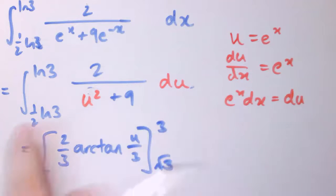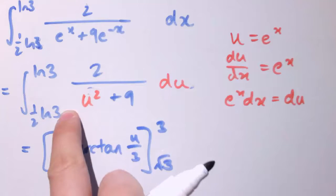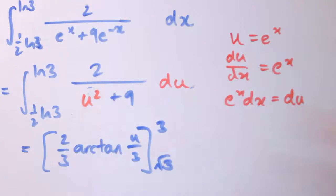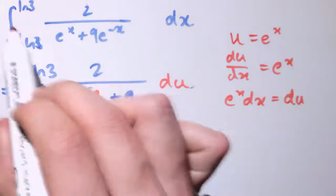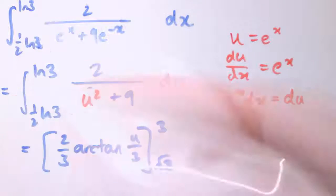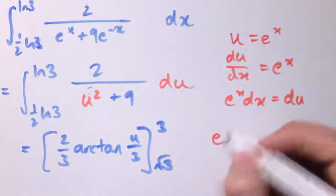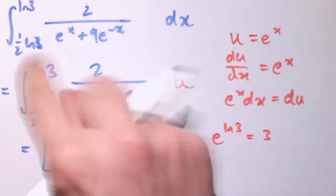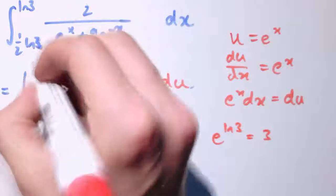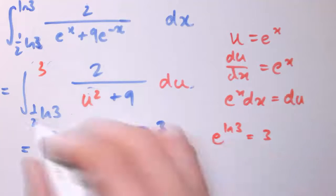Because, of course, actually the other thing I haven't done here is I should replace my limits with limits in u instead of limits in x. So u is e^x. So I want u is... So for the top limit, I want e^(ln 3) which is just 3. So that one is 3 there.